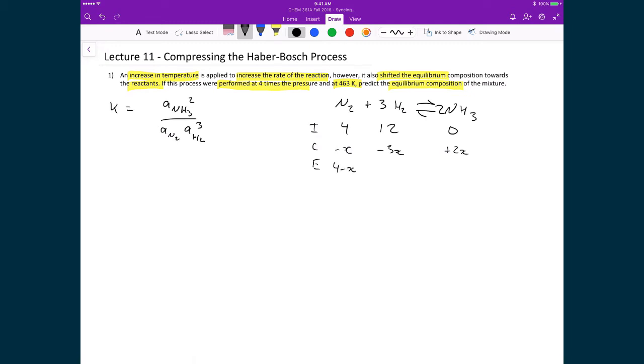Which means that at equilibrium the nitrogen is going to have 4 minus x. The hydrogen is going to be 12 minus 3x. And the ammonia is going to be at 2x.